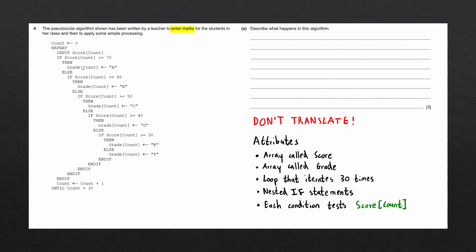To figure out what is being input by the algorithm, we can look at the question — the teacher is entering numbers on the input line. Since this input line exists within the loop, we can say that 30 marks are entered and stored in the array called score. When we enter a single mark into the array, that mark is then tested against a number of values in the nested if statements.